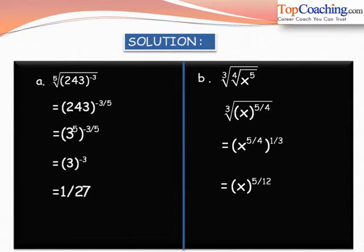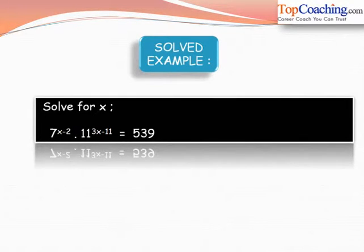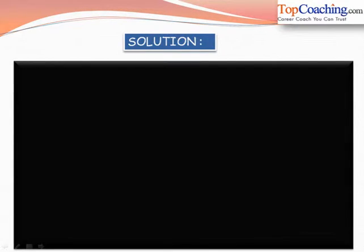Using laws of exponents we can reduce lengthy terms to simplified expressions. Now let's solve the last problem: solve for x in the equation 7 to the power of x minus 2 into 11 to the power of 3x minus 11, equals 539.